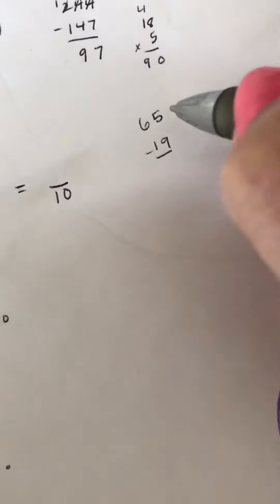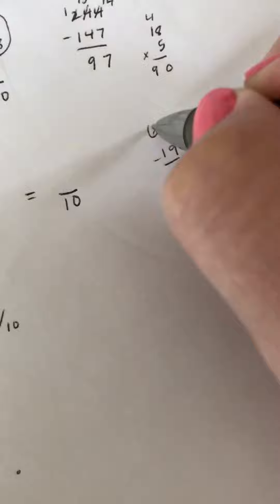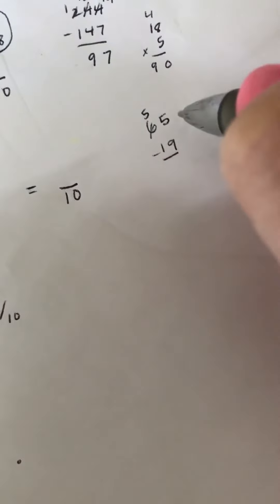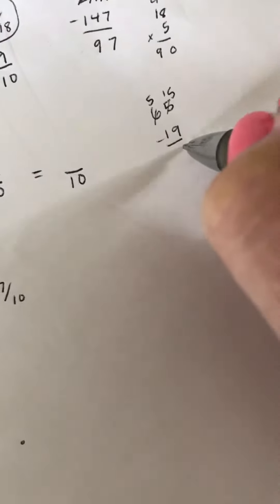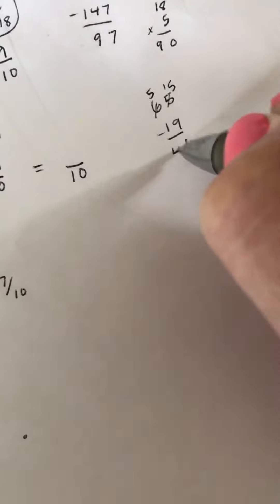So double digit subtraction. 5 can't take away 9. Go to the 6, borrow a group of 10, and then add it to the 5. And then 15 minus 9 would be 6. 5 minus 1 would be 4.